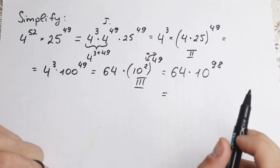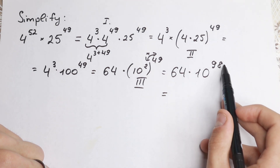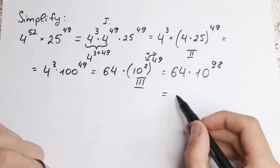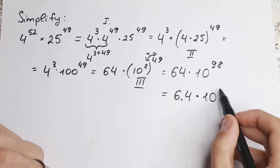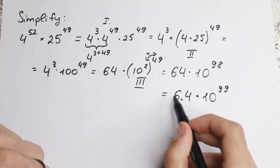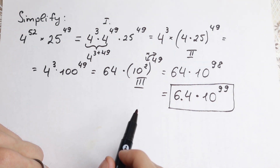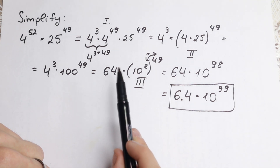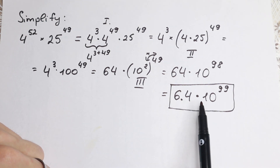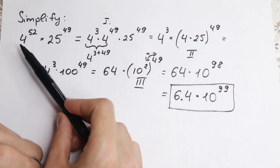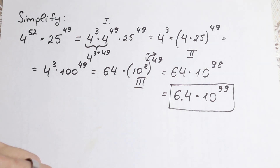We can move the decimal point one place to the left and multiply by an extra factor of 10. So the result is 6.4 times 10 to the power of 99, and this is our answer. As you can see, without any calculators, we found our final answer easily and without any problems — even though at first this problem looked really hard.